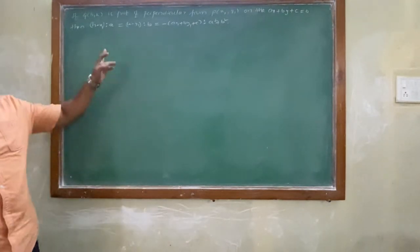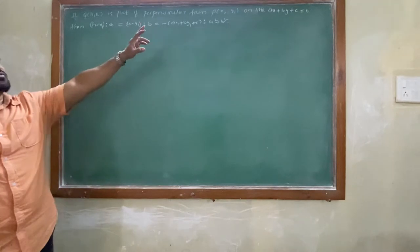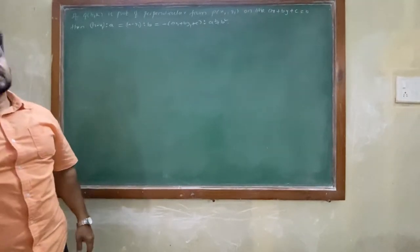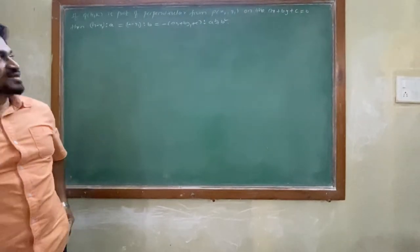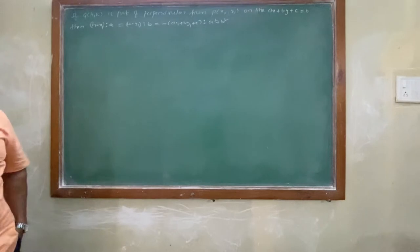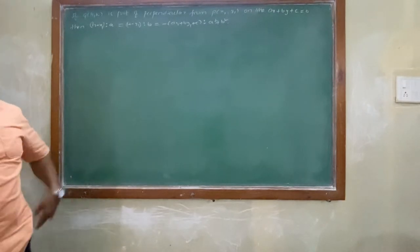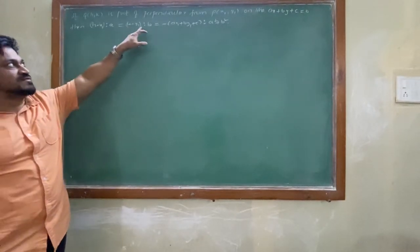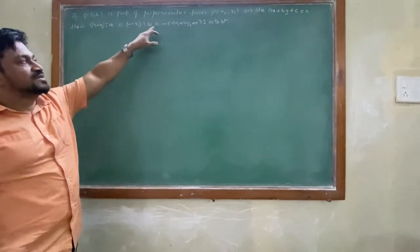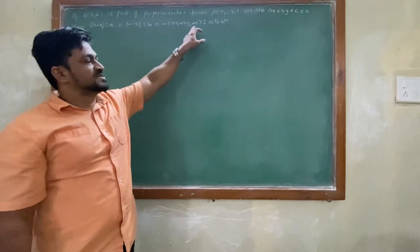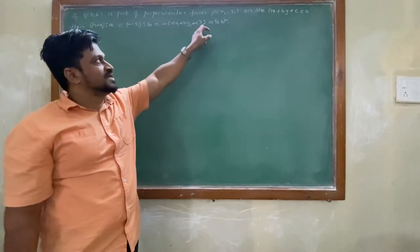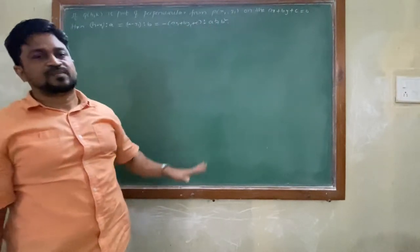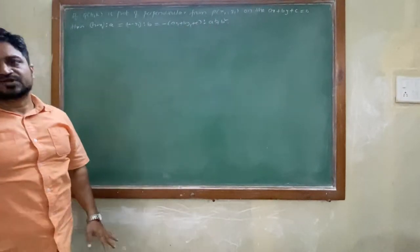Q(h,k) is the foot of perpendicular from P(x1,y1) on the given line. Then (h-x1)/a = (k-y1)/b = -(ax1+by1+c)/(a²+b²). This is what we need to prove.